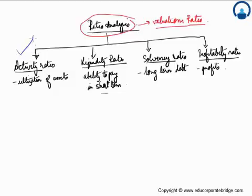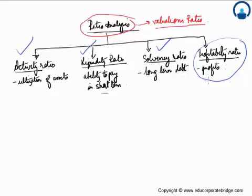We are done with the activity ratio, we've discussed the liquidity ratio, and we have also discussed the solvency ratio. So last is basically the profitability ratio — the profits of the company can be found out using various tools and techniques. One of them we have already applied when we had done the common size statement on the income statement, so I'll just revisit that and take forward different other ratios as well.